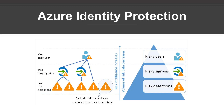Microsoft analyzes 6.5 trillion signals per day to identify potential threats. These signals come from Azure AD, Microsoft accounts, and Xbox accounts. The signals generated by these services are fed to Identity Protection, so they can be used by tools such as conditional access, which uses Identity Protection signals to make access decisions. These signals are also fed to security information and event management tools, such as Sentinel, for further investigation.